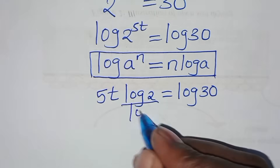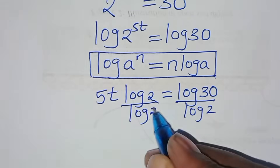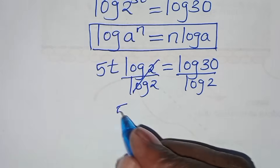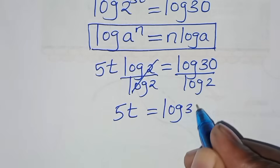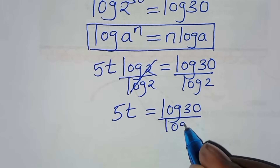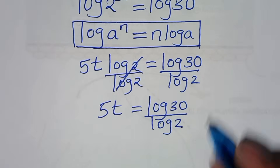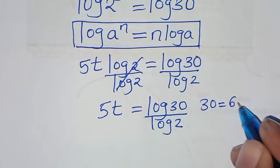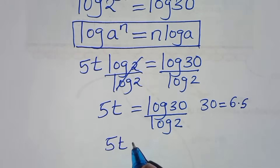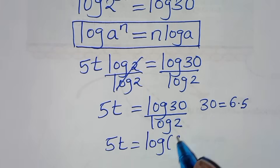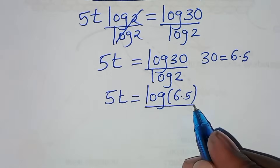We divide both sides by log 2, giving us 5t equal to log 30 divided by log 2. We can express 30 as 6 times 5, so substituting, this is 5t equal to log of 6 times 5, divided by log 2.